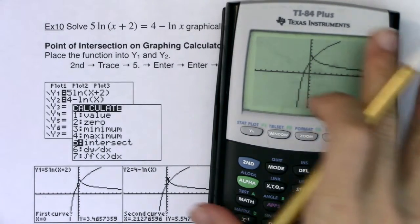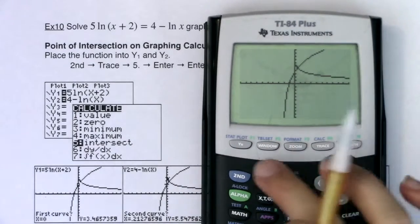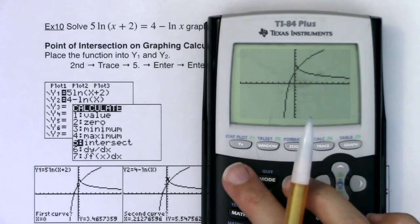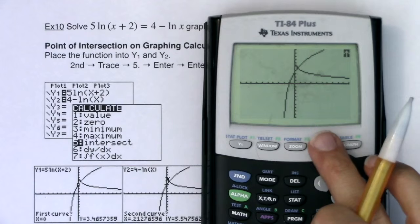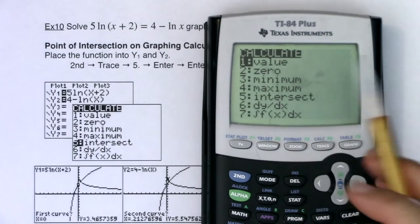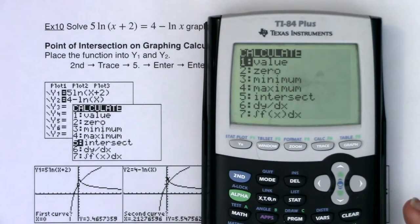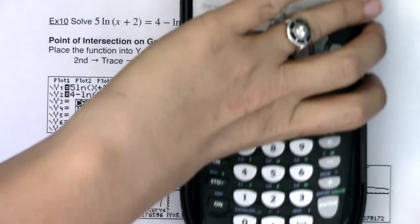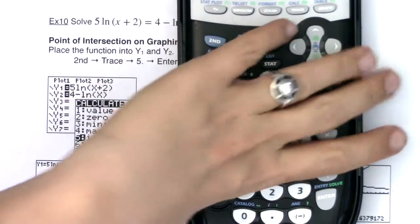But let's go ahead and use our calculator to find that y value, or excuse me, that x value. So let's hit second and trace, and we want option five. Now you can scroll down to five and hit enter, or I'm lazy. I'm just going to hit the button five. I know it's off screen, but I'll show you. I'm just going to hit five. Okay, and then it takes me to that same screen.